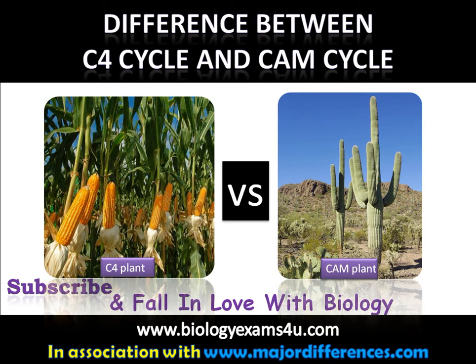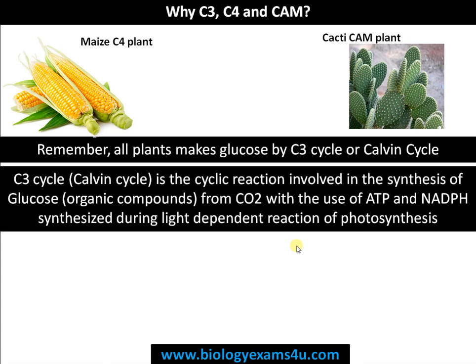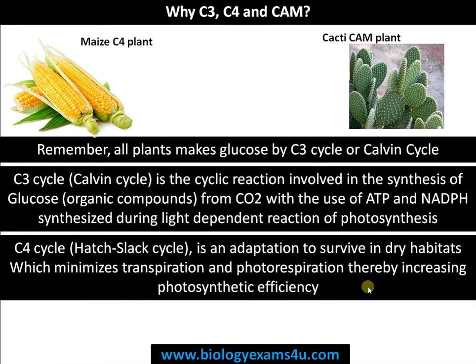Both are adaptations to live in dry, hot conditions. First of all, starting with why C3, C4, and CAM — the most important point is all plants make glucose by C3 cycle or Calvin cycle, even though it is a C4 plant or a CAM plant. This is just a deviated pathway or an adaptation to reduce photorespiration and transpiration. Calvin cycle is a cyclic reaction involved in the synthesis of glucose from carbon dioxide with the use of ATP and NADPH, synthesized during the light-dependent reaction of photosynthesis.